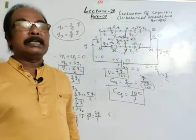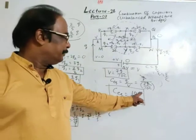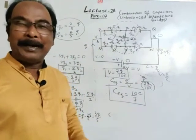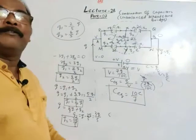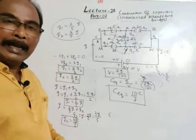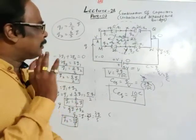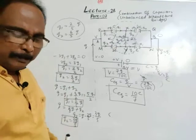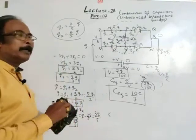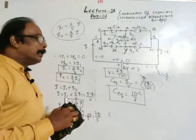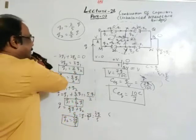Equivalent capacitance C_eq = Q/V = Q ÷ (7Q/10C) = 10C/7. If a value of C is given, substitute it here. This is our result.